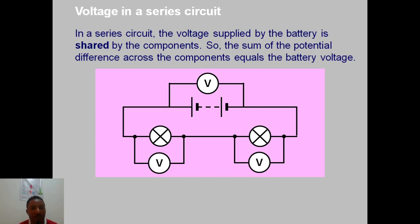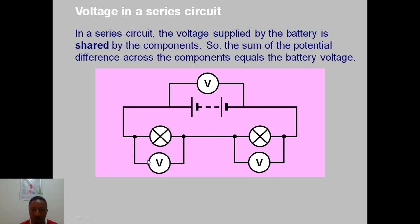Voltage in a series circuit: the voltage supplied by the battery is shared by the components, so the sum of the potential difference across all components equals the battery voltage. If I check the voltage across each bulb by connecting a voltmeter in parallel, each voltmeter tells me the potential difference across that bulb. When I combine all the readings, they give me the total voltage that the cell produces.